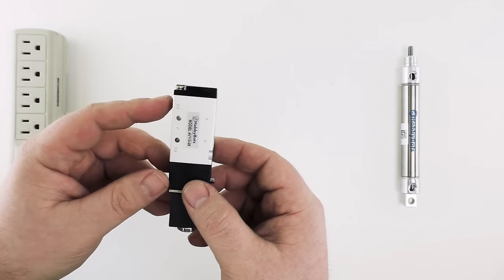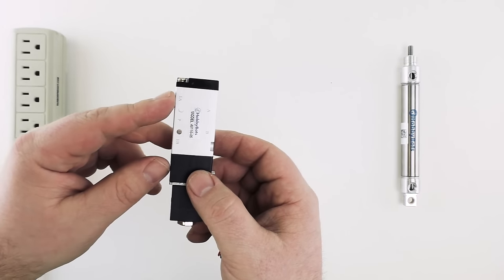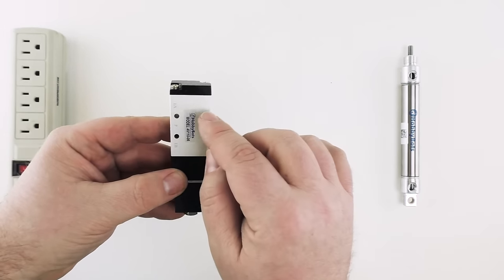This is called a five-port solenoid because it also has two exhaust ports on the left hand side which means that you can meter or control the speed of the exhaust for each of the two air outputs.